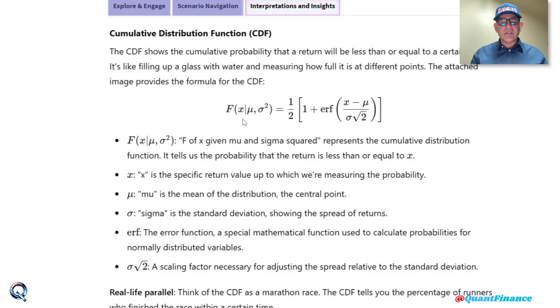This represents cumulative distribution function. It tells the probability that the return would be less than or equal to x. So x is definitely the specific return value up to which we are measuring the probability.